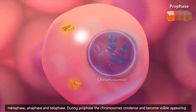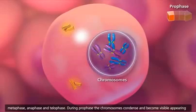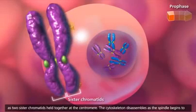During prophase, the chromosomes condense and become visible, appearing as two sister chromatids held together at the centromere.